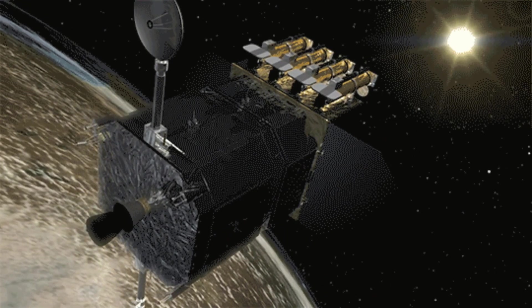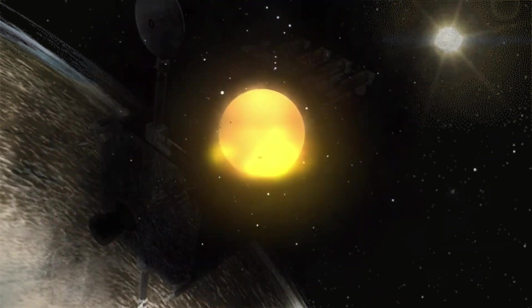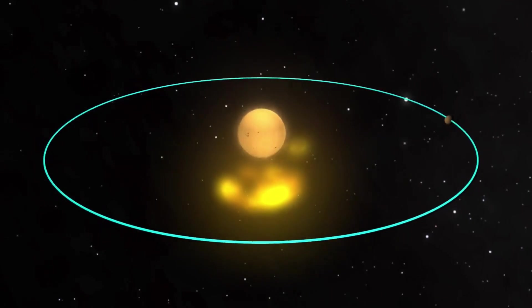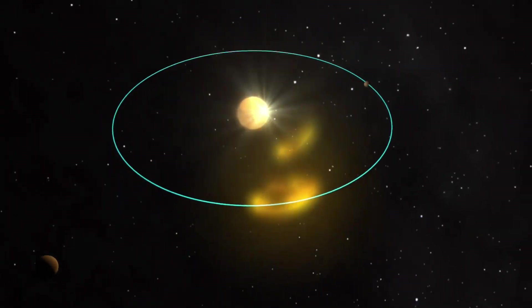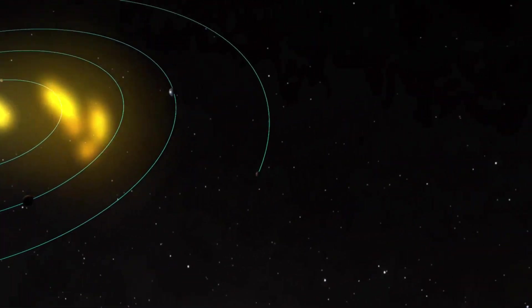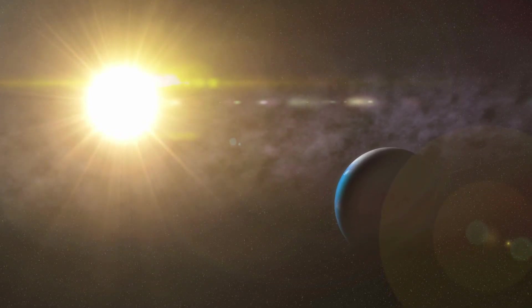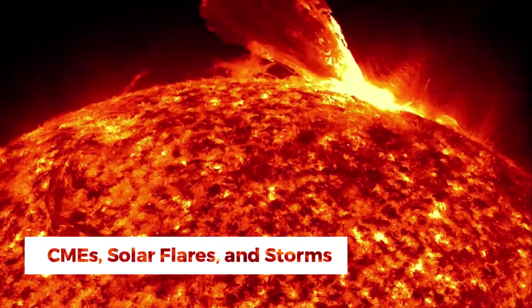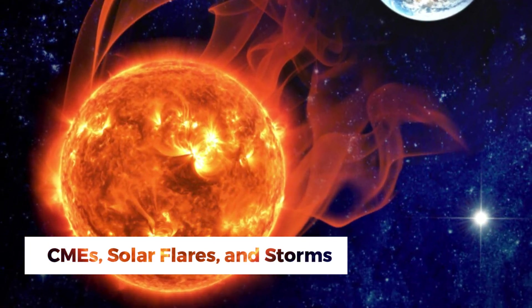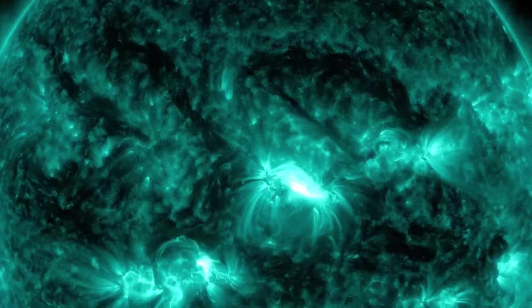NASA's Solar Dynamics Observatory, SDO, has indicated that a perilous M-class solar flare might be headed towards Earth. During this heightened activity phase, Earth might be exposed to various solar phenomena, including CMEs, solar flares, and storms, which could have potentially severe implications.